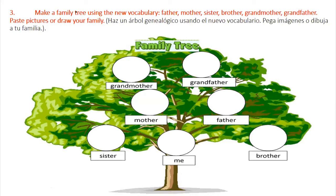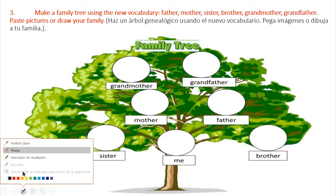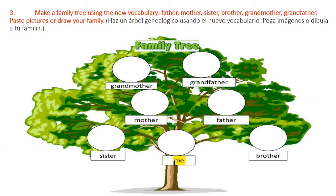We are going to make a family tree using the new vocabulary. We will paste images or draw our family. What you see here is a model. If I have a photograph with the members of my family, we can use it and have the child simply point and identify: grandmother, grandfather, mother, father, sister, or brother. When the child points to themselves, they say the word "me" — "this is me," meaning "this is me." As long as the child recognizes the vocabulary and practices it, that's the evidence for this activity.